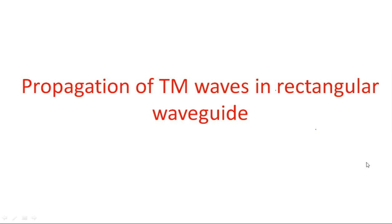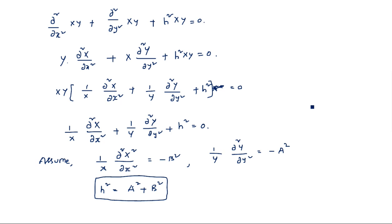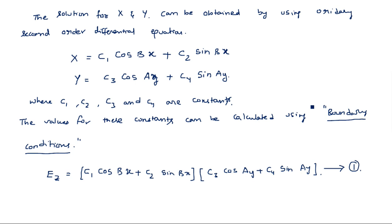In this video I am continuing the derivation started in the previous video — propagation of TM waves in the rectangular waveguide. We have taken the ez equation because it is a TM wave: ez exists and hz is equal to zero. We assumed ez as a product of two separate variables X(x) and Y(y), where X = c1·cos(βx) + c2·sin(βx) and Y = c3·cos(αy) + c4·sin(αy). To simplify ez we need to find the four constants c1, c2, c3, and c4 using boundary conditions.